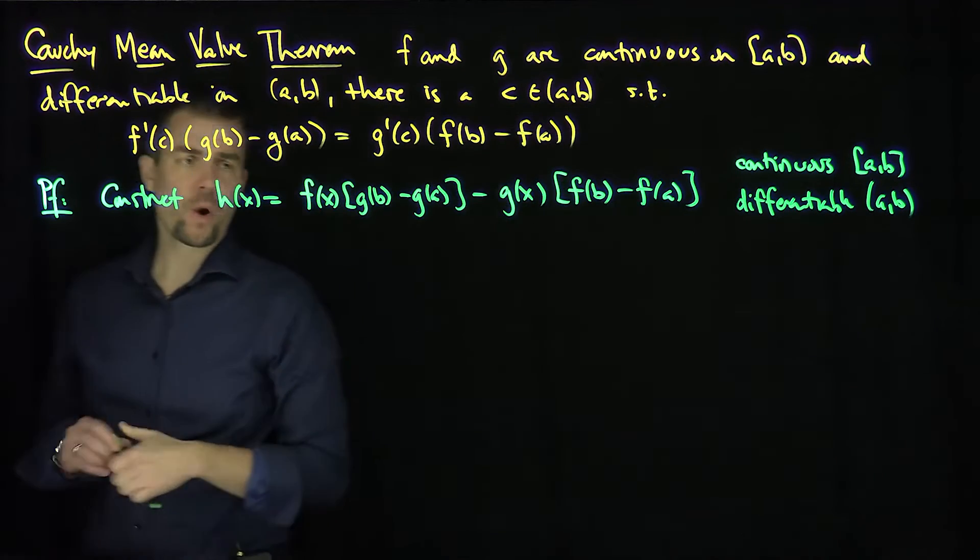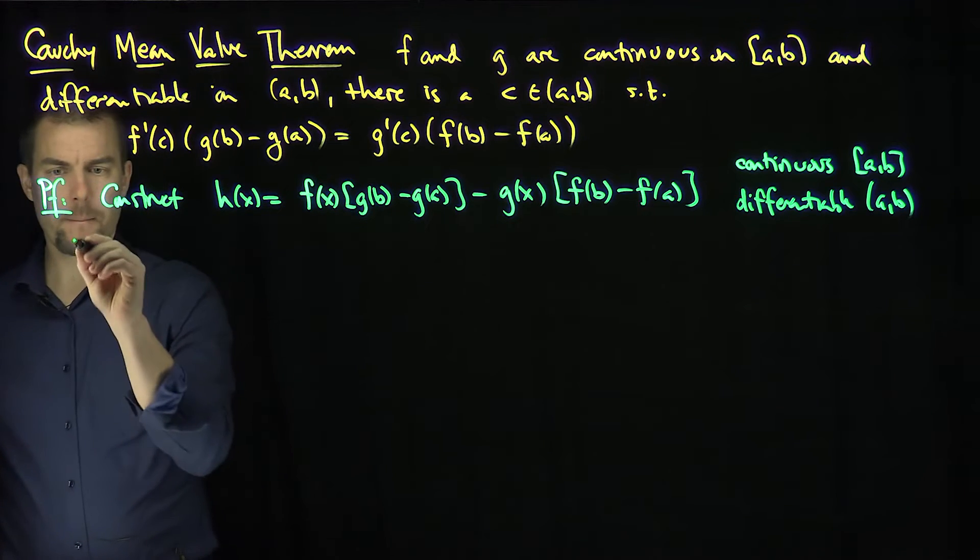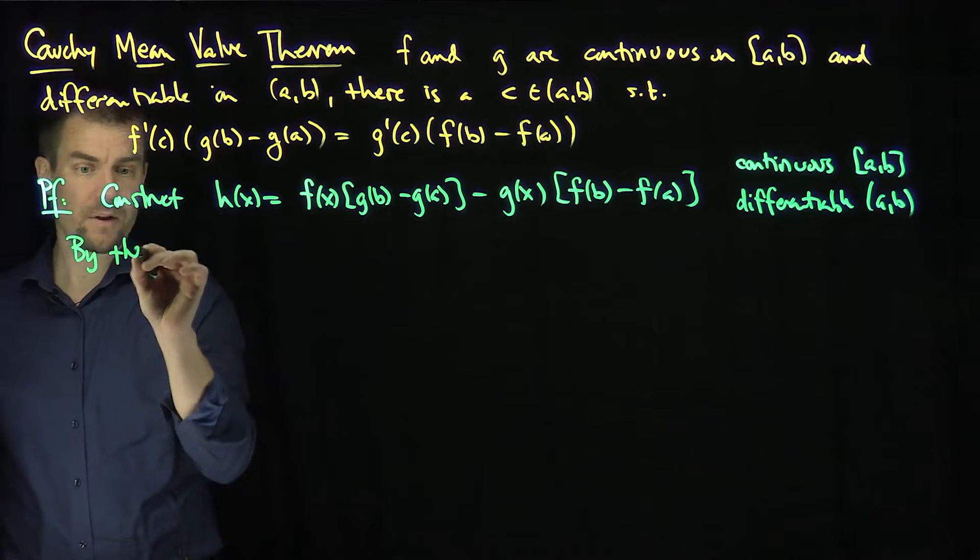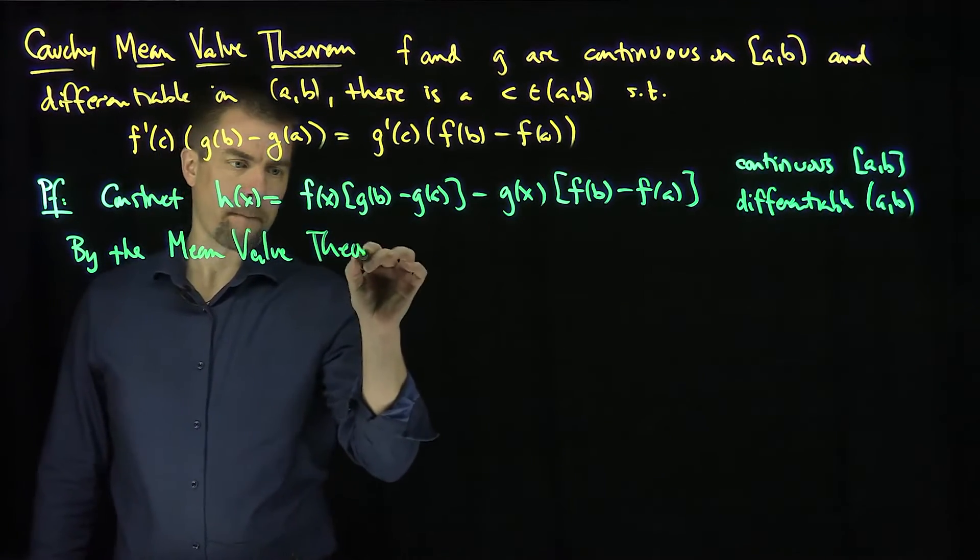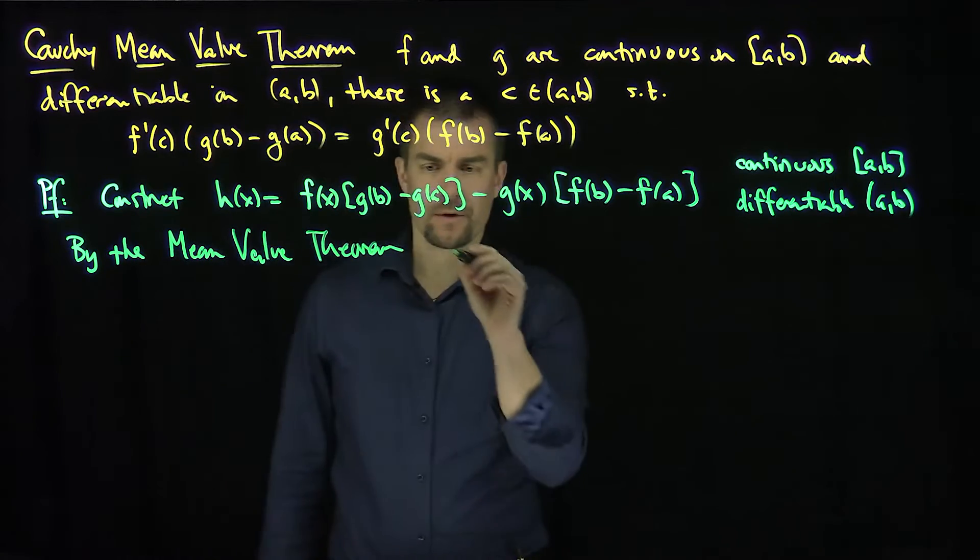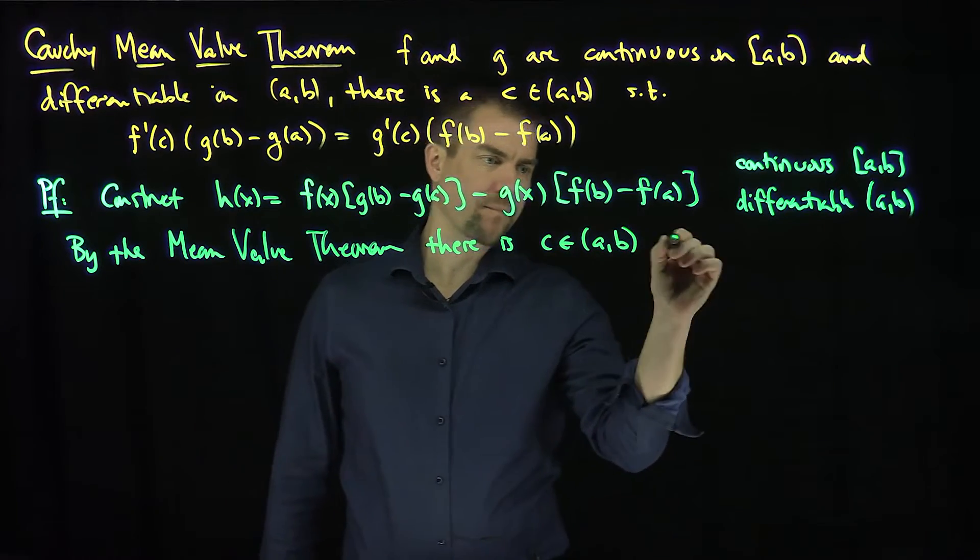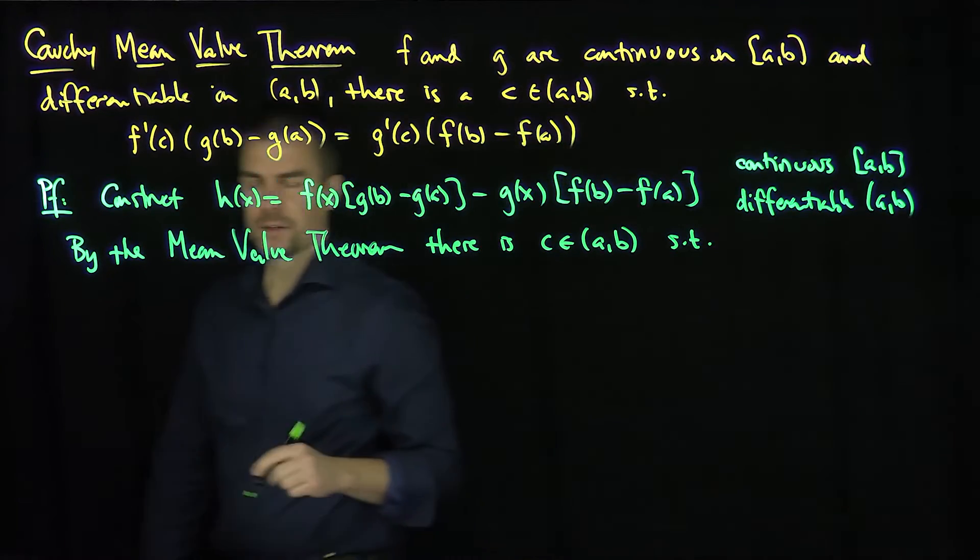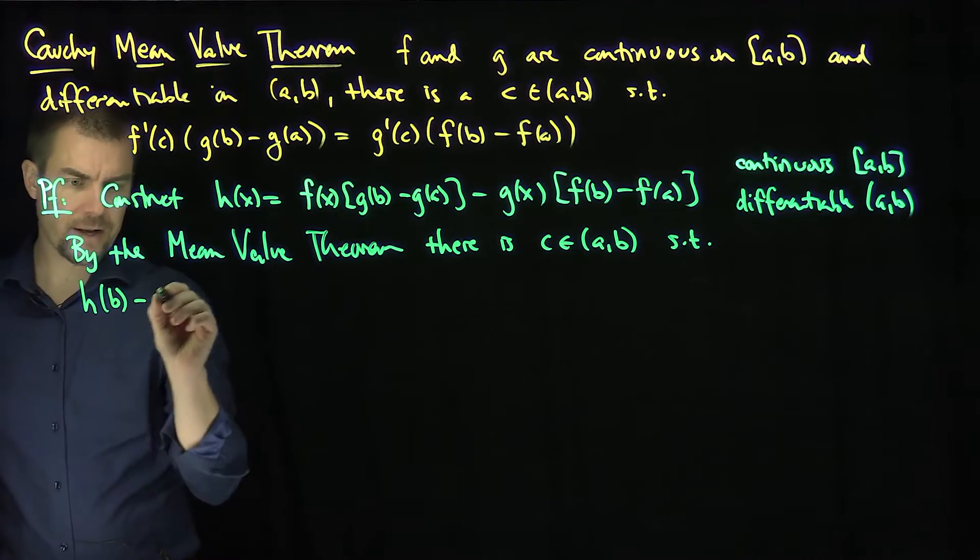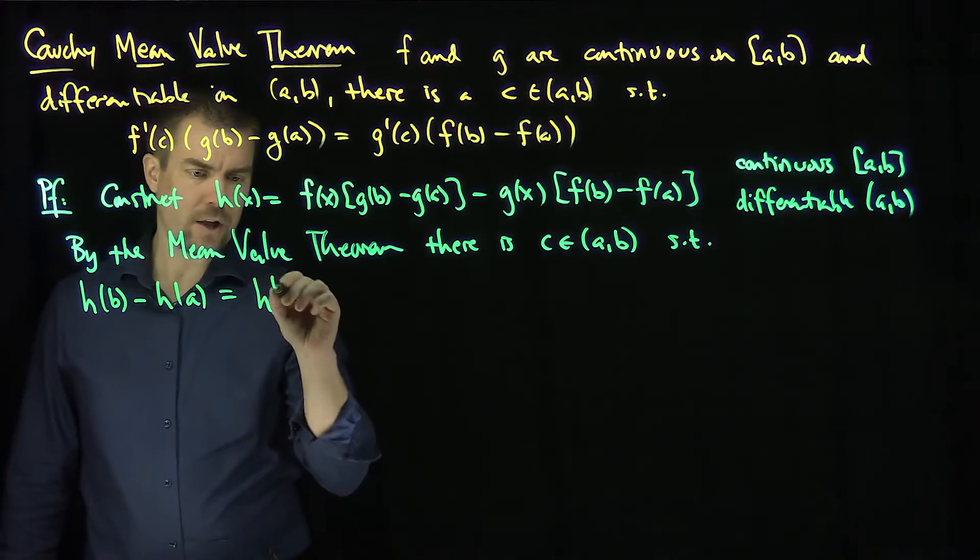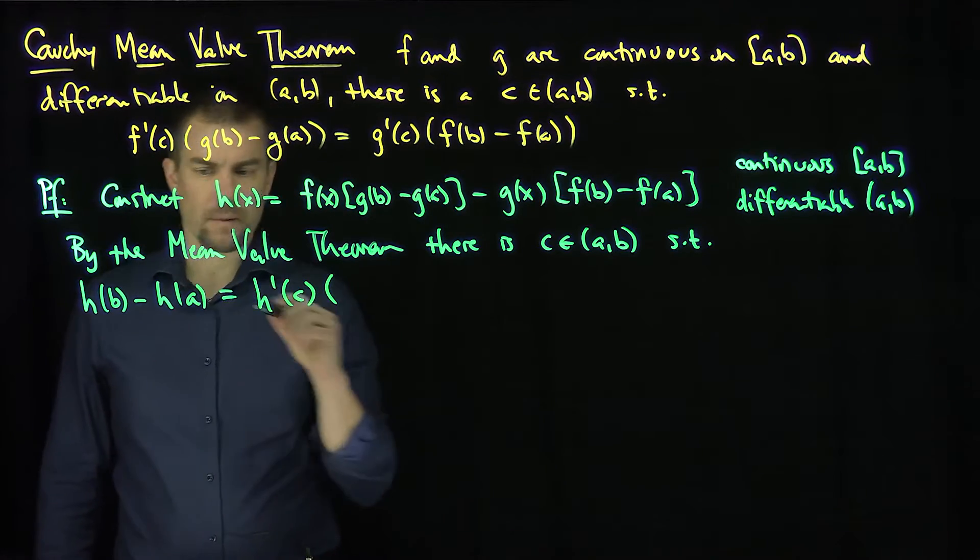And so what can I say, therefore? I can therefore say that by the mean value theorem, the ordinary mean value theorem, there's a c in the interval (a,b) such that h(b) - h(a) is equal to h'(c) times (b - a).